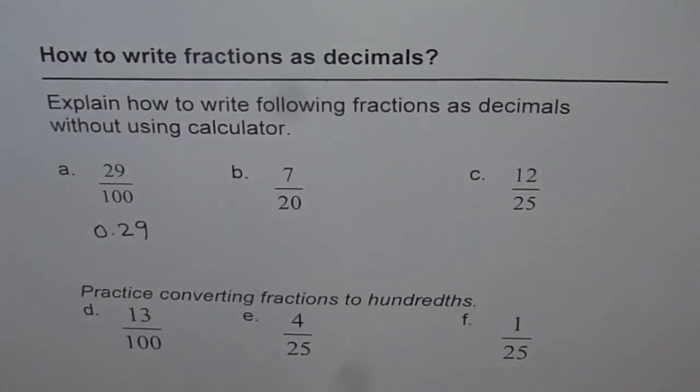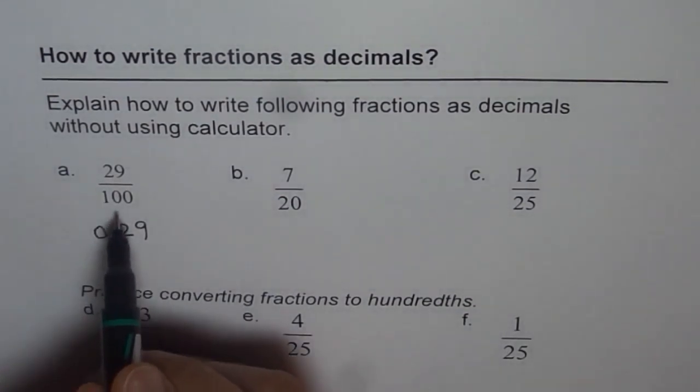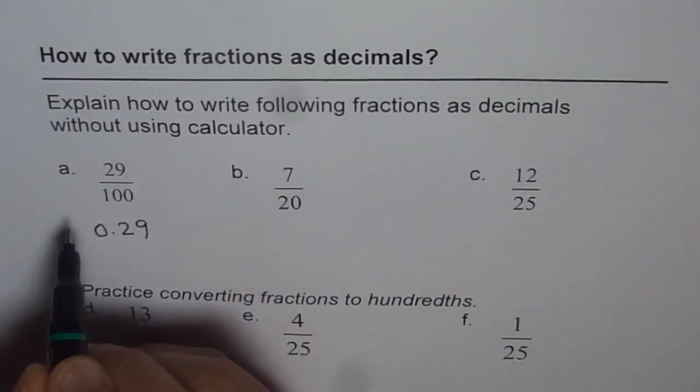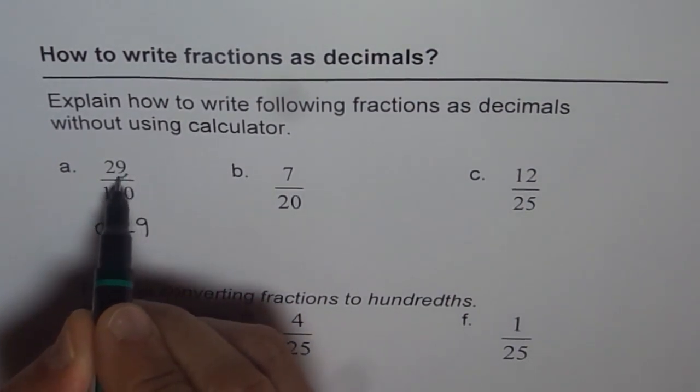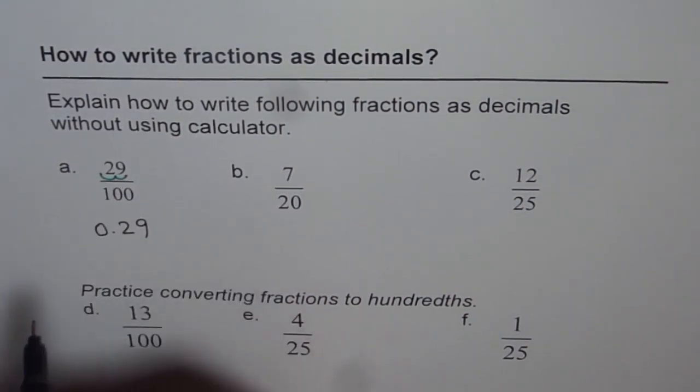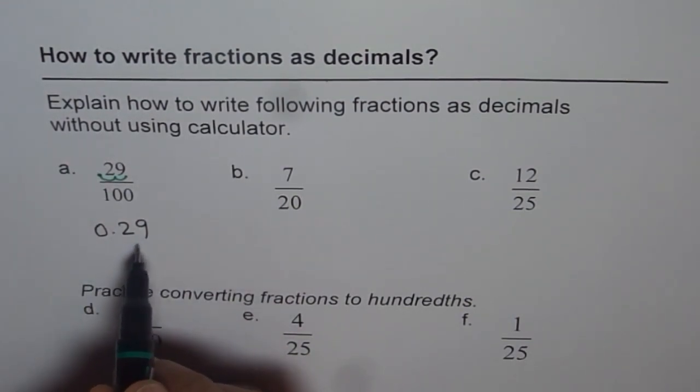It is a good practice to write 0 when there is no number before the decimal. When you divide by 100, what happens? Imagine there is a decimal here; it moves two places: 1, 2. And you get it right there, 0.29.